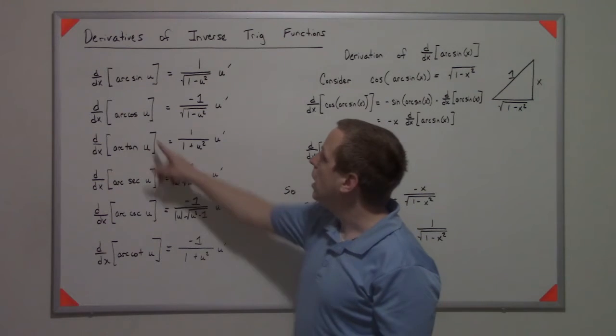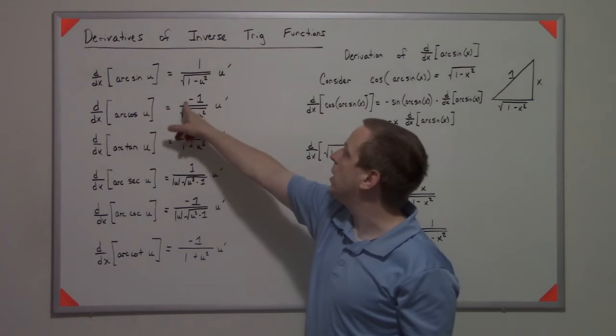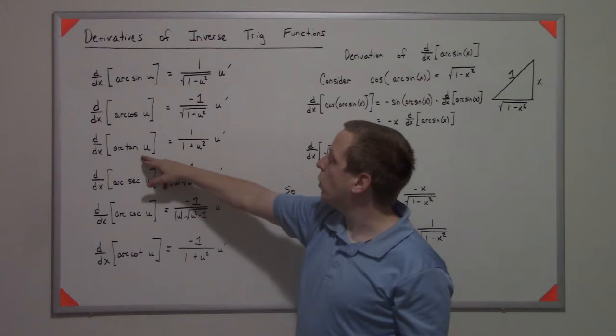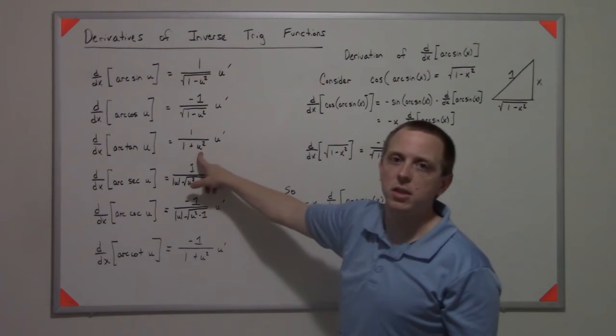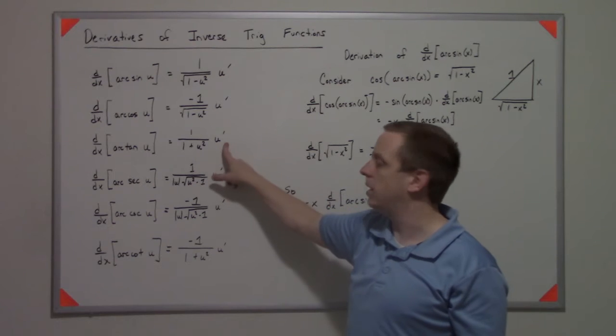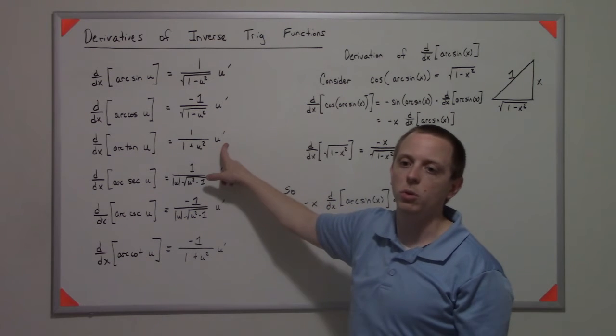The arc cosine is the same thing except it has a negative. For the arc tangent, instead of these square roots, it's 1 over 1 plus the something squared, times its derivative by the chain rule.